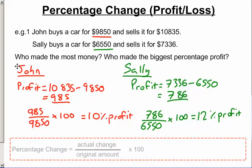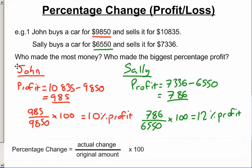And the way we did this to work out the percentage change, we did the actual change. That was the first step, the $985 or the $786. We put that over the original amount. It's very important that it's the original amount, not the new amount. And then we times by 100 to get it into a percentage.